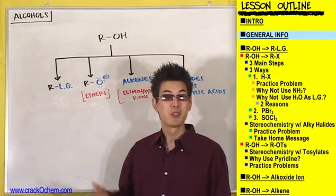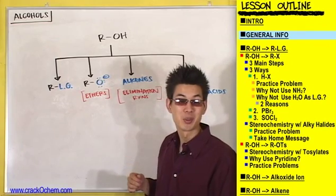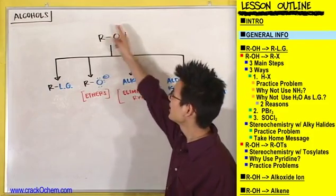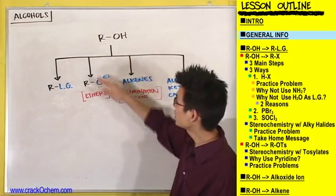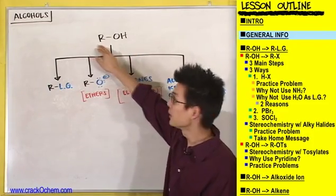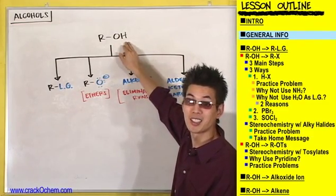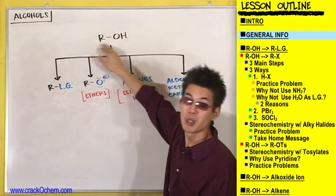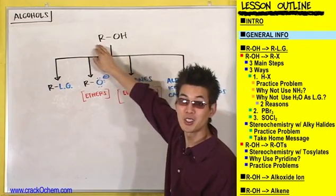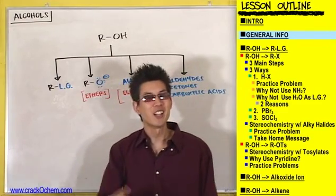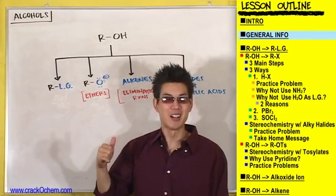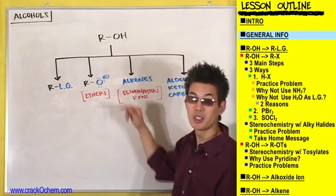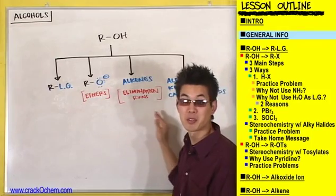Let's talk about some general information before we get into the details of any one of these reactions. First things first, what is an alcohol? An alcohol is just an R group — an alkyl group — with an OH stuck on it. That's why they call it an alcohol: you've got an alkyl group with an OH on it, so alkyl plus OH equals alcohol.